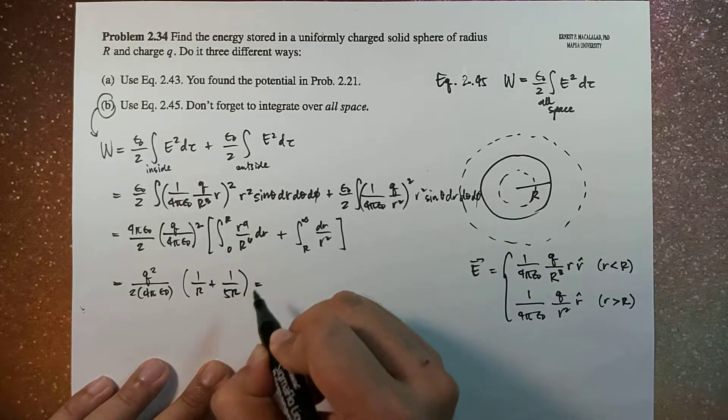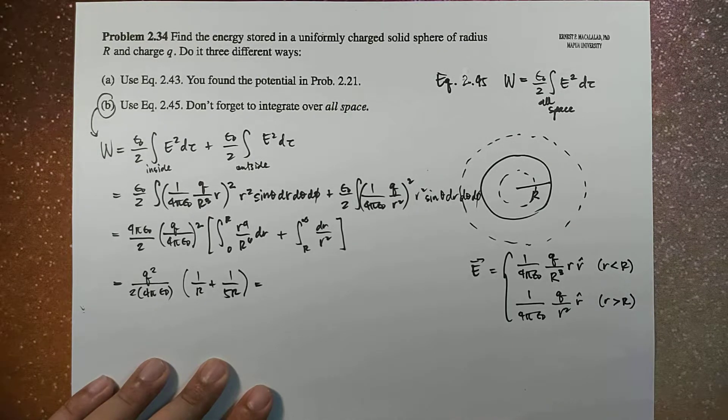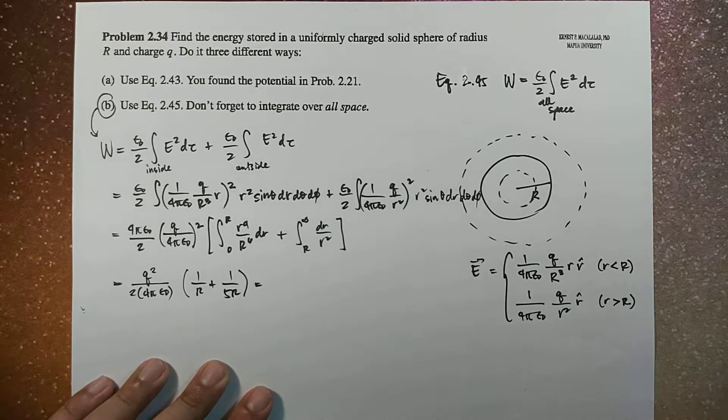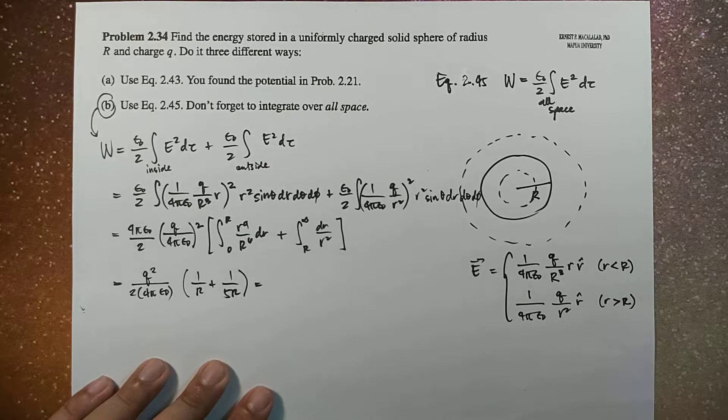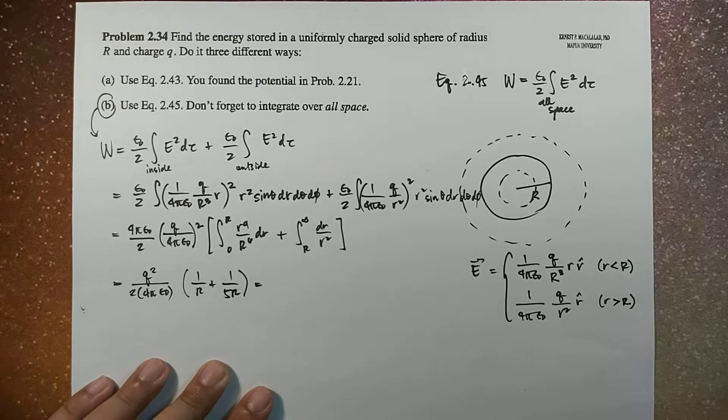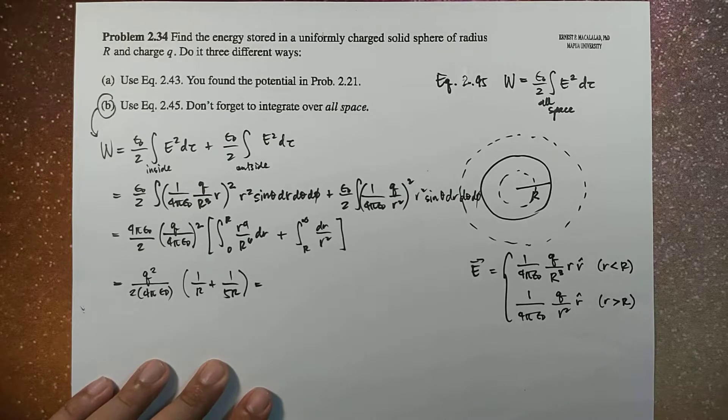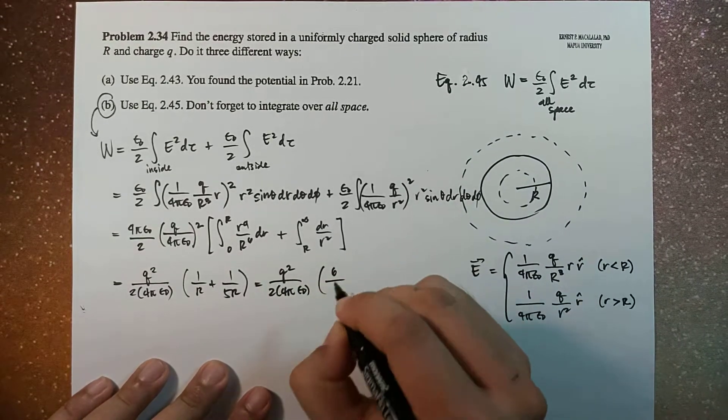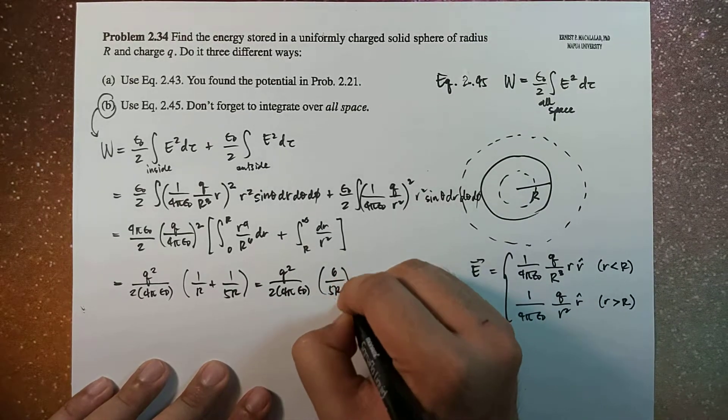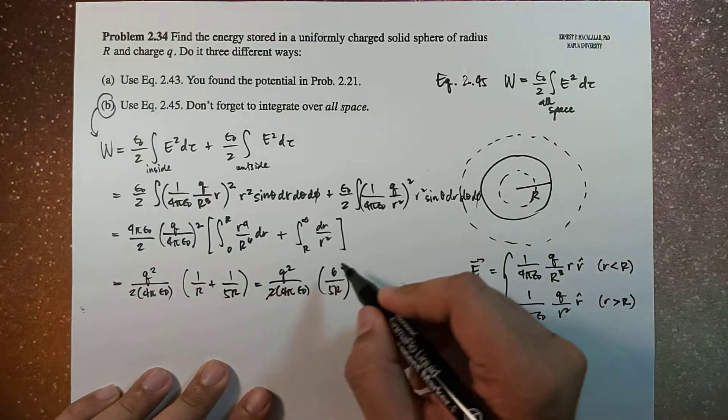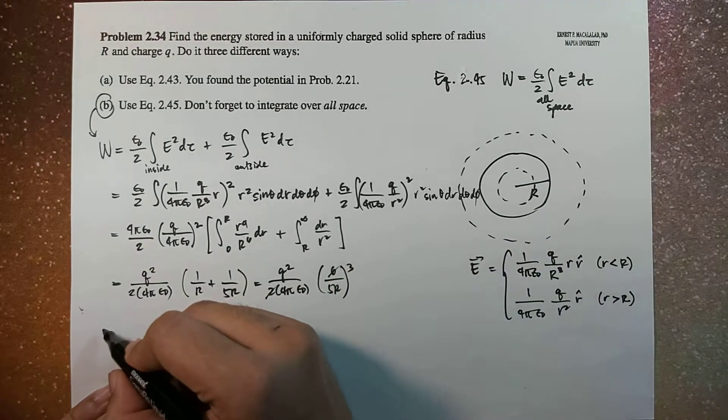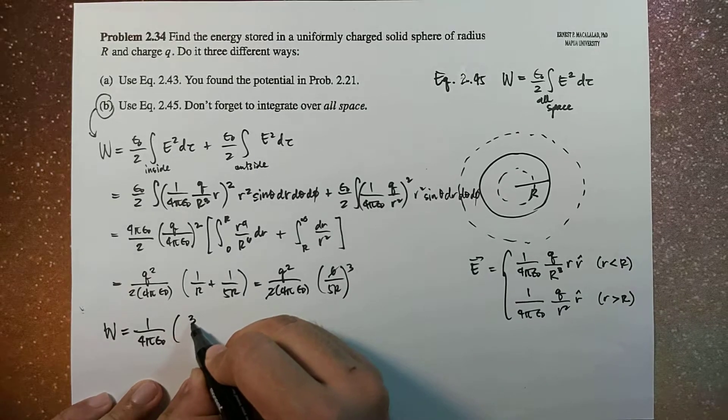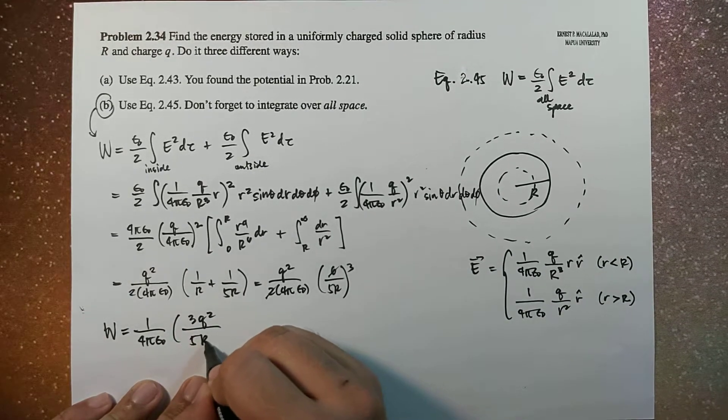So this is Q squared over 2 times 4 pi epsilon naught times 1 over R plus 1 over 5R, which gives us 1 over R plus 1/5 over R. So this becomes 6 over 5 over R. So this is Q squared over 2 times 4 pi epsilon naught times 6 over 5R. The 2 will cancel with 6, this becomes 3. So we end up with the expression that we obtained earlier: 1 over 4 pi epsilon naught times 3 Q squared over 5R.